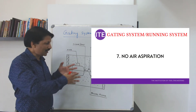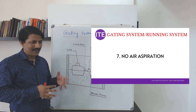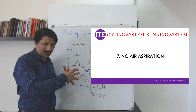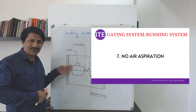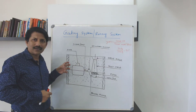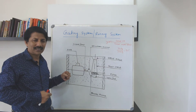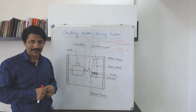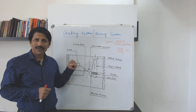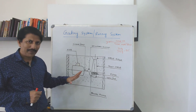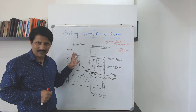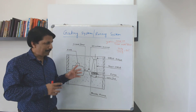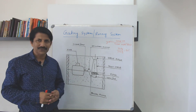Air aspiration means that when you are filling the metal, sometimes air may get absorbed into the molten metal, which is then carried further and causes casting defects like blow holes and gas holes. So the development of a casting mainly depends upon the gating system as well as the design of the die.